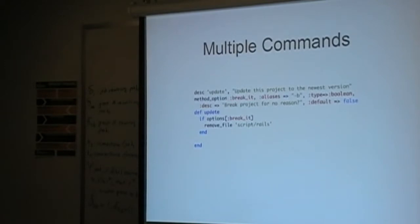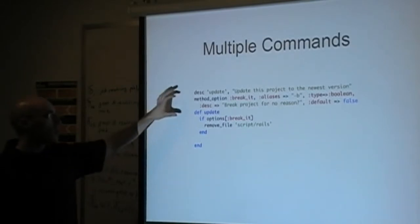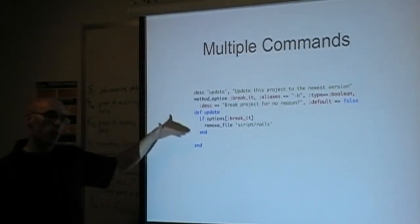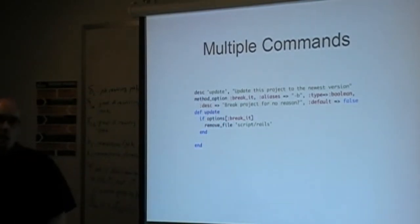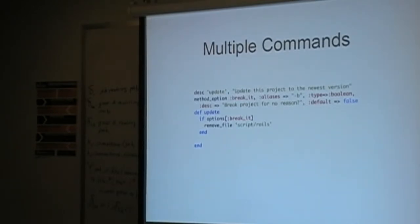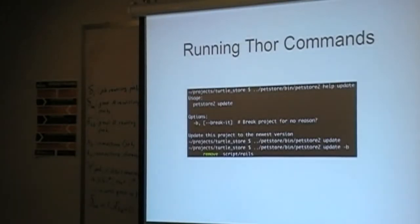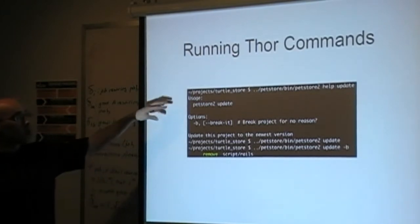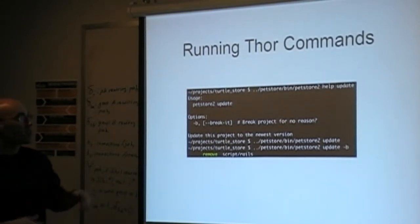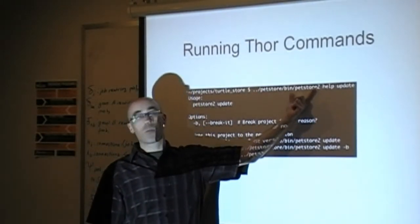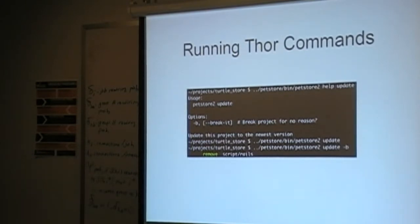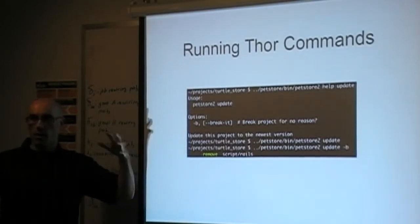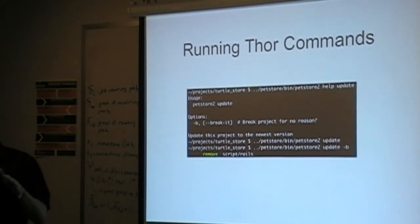There's a lot more on the Thor wiki about other method options. Does the ordering matter — do you have to put the description first, then method_option? No, I don't think so, you just have to have them connected. By convention you put it above the method as documentation for what the method does. The help output shows all auto-generated help based on syntax — you run 'pet_store help update' and it tells you how it should be used, plus the specific options with their descriptions. This is very similar to how the Rails generator's usage file works.